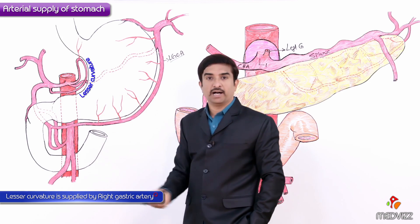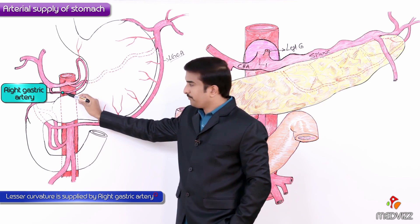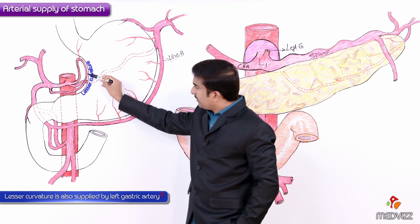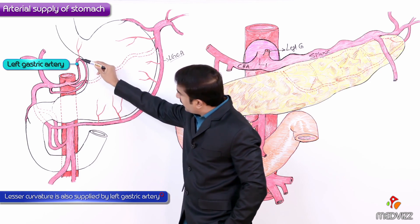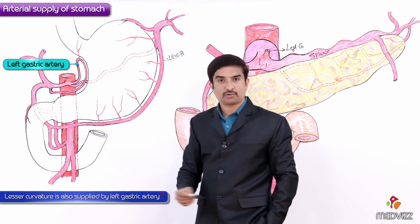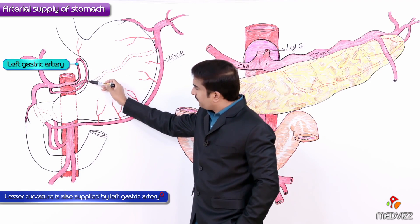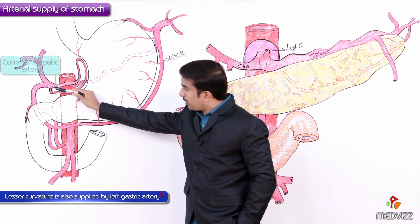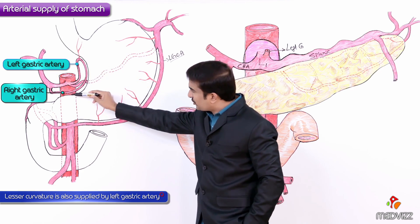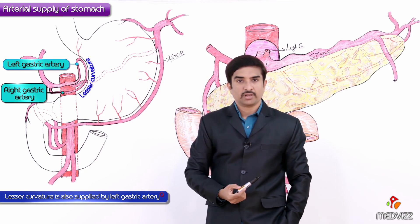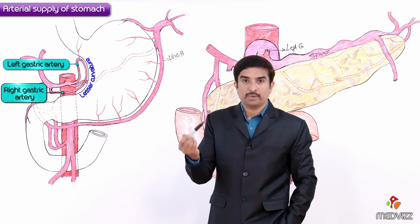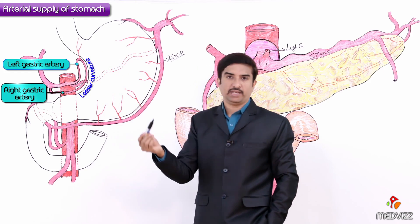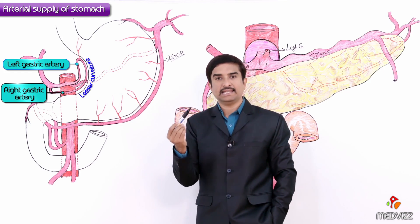The lesser curvature of the stomach is supplied by the right gastric artery, which is a branch of the common hepatic artery, which is a branch of the celiac trunk. It is also supplied by the left gastric artery, which is a direct branch of the celiac trunk. These two arteries anastomose with each other at the lesser curvature — the right gastric artery inferiorly and the left gastric artery superiorly.